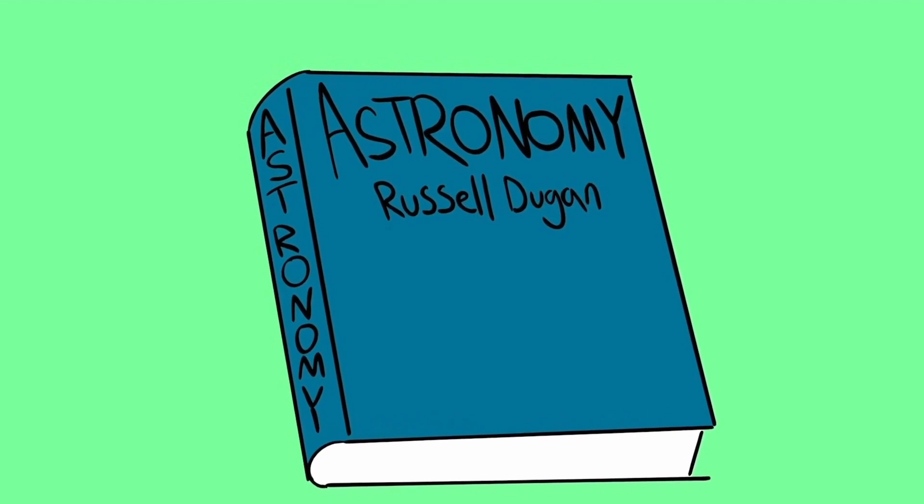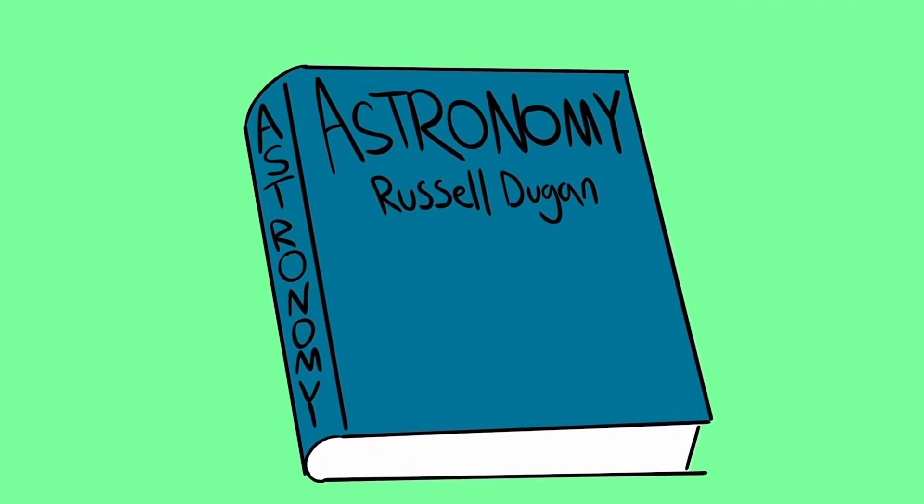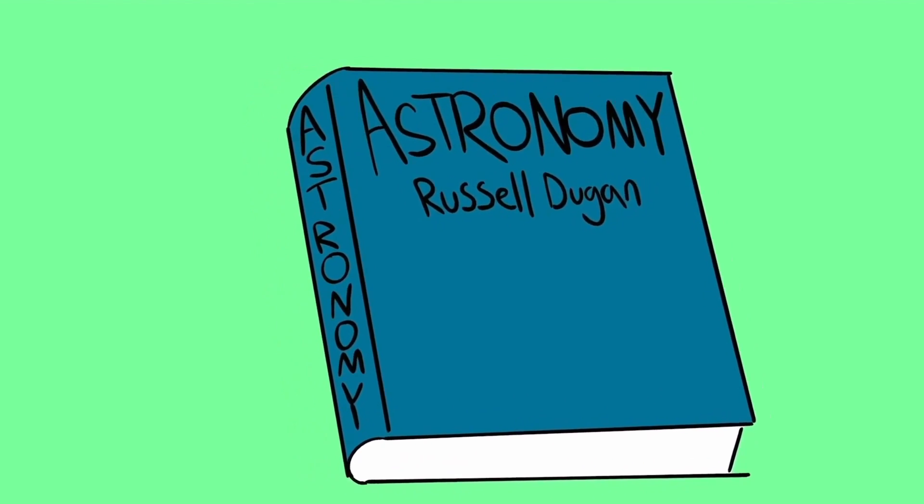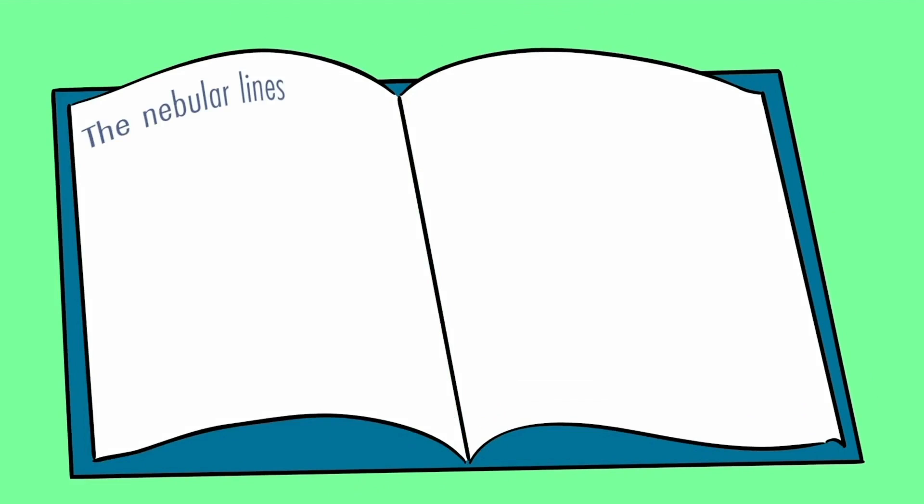The book was simply a textbook called Astronomy, written by a prominent astronomer, Russell Dugan. Dugan was talking about the riddle of nebulium and he speculated that the nebula lines may be emitted only in a gas of very low density.